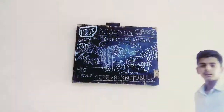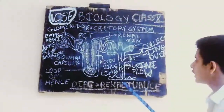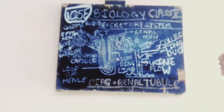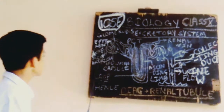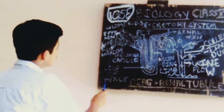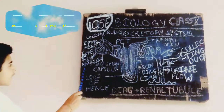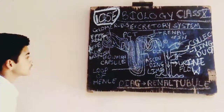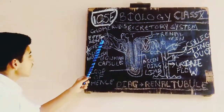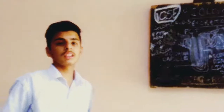Now let's talk about the kidney's fundamental unit, which is the structural and functional unit — the nephron. This is an overview. This is the efferent arteriole. This is the renal artery and this is the blood. This is the Bowman's capsule. This is where ultrafiltration takes place.